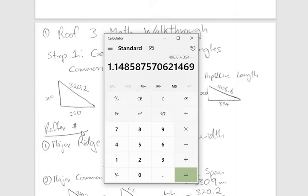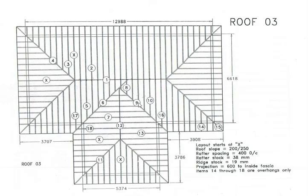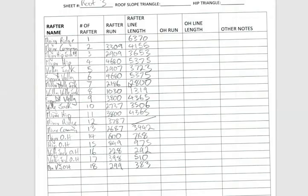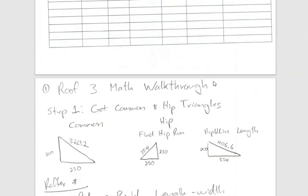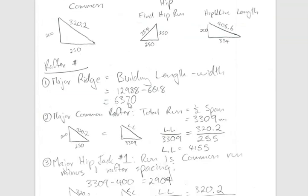Our first component of this roof is the major ridge. The rule is to take the length of the building and subtract the width of the building, and that gives you the length of the ridge. The math for that is shown here — pretty simple.